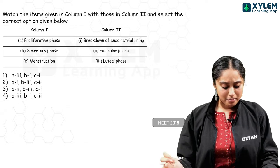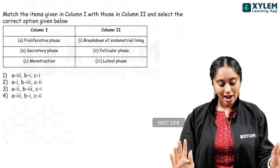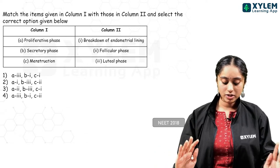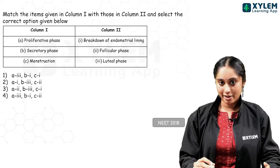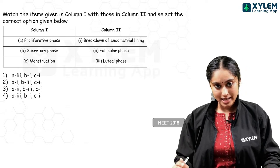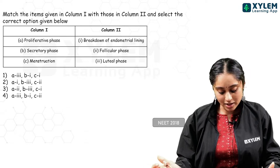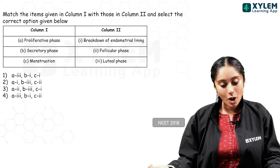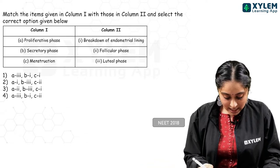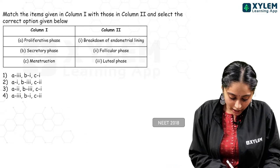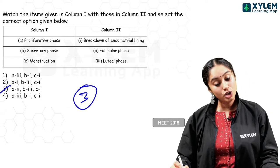NEET 2018 match the items: column 1 has proliferative phase, secretory phase, menstruation. Column 2 has breakdown of endometrial lining, follicular, luteal. Follicular phase is another name for proliferative phase; luteal phase is another name for secretory phase; and during menstruation there is a breakdown of the endometrial lining. So: A2, B3, C1. That is the answer — good job!